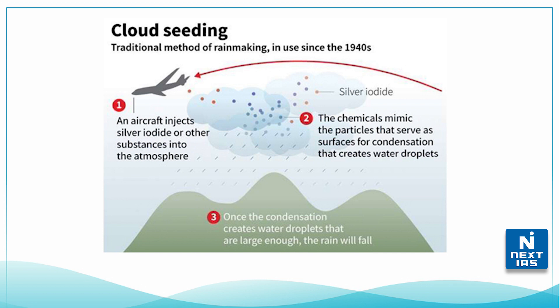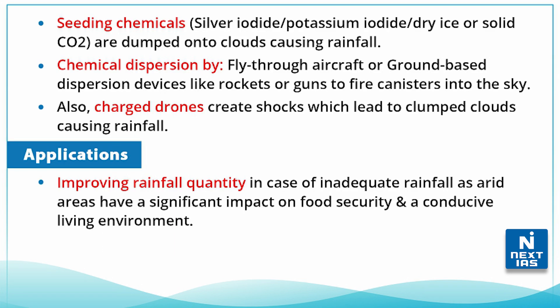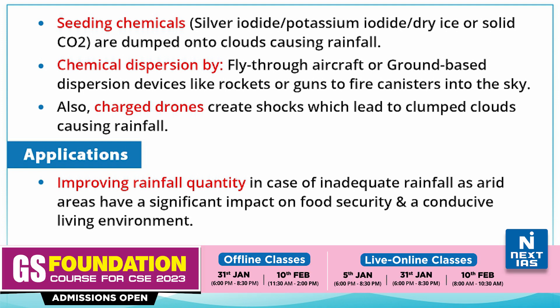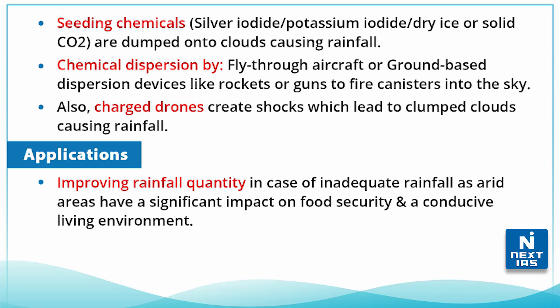It works only when there are enough pre-existing clouds. For this, seeding chemicals such as silver iodide, potassium iodide, dry ice, or solid carbon dioxide are used. These chemicals are dumped onto clouds to cause rainfall.